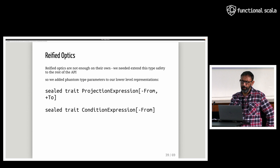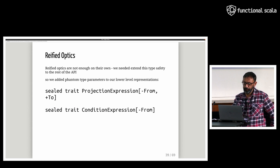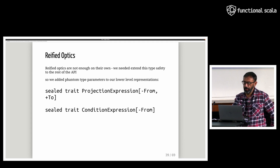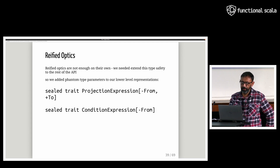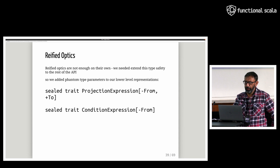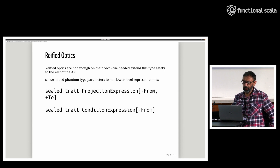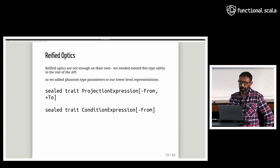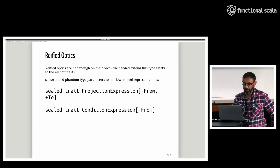Reified optics are not enough on their own. We need to extend this type safety to the rest of the API, so we added phantom type parameters to our lower-level representations. The contravariant from-type parameter represents the whole item, and the covariant to-type parameter represents the attribute or piece we are dealing with. This was cascaded all the way down to the rest of the API.